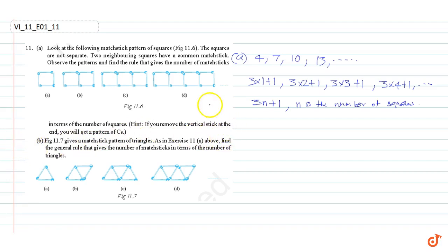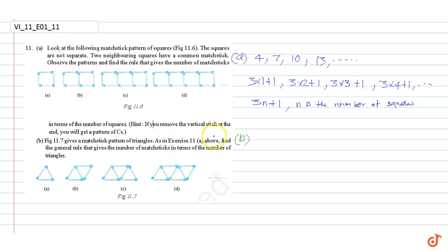Part B: Figure 11-7 gives a matchstick pattern of triangles. As in the exercise above, find the general rule that gives the number of matchsticks in terms of the number of triangles. We can see that the first triangle has 3 matchsticks and the second triangle has 5 matchsticks.